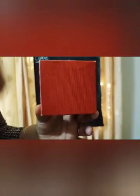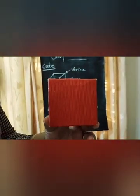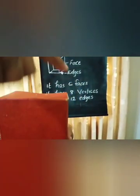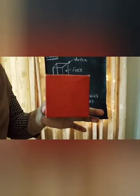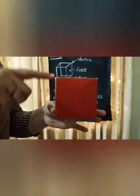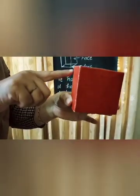A Cube has 6 Faces — counting: 1, 2, 3, 4, 5, 6. Then it has 8 Vertices — counting: 1, 2, 3, 4, 5, 6, 7, 8. A Cube has 8 Vertices and 12 Edges — counting: 1, 2, 3, 4, 5, 6, 7, 8, 9, 10, 11, 12.